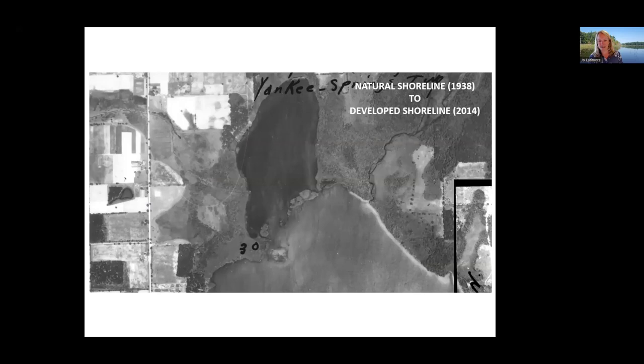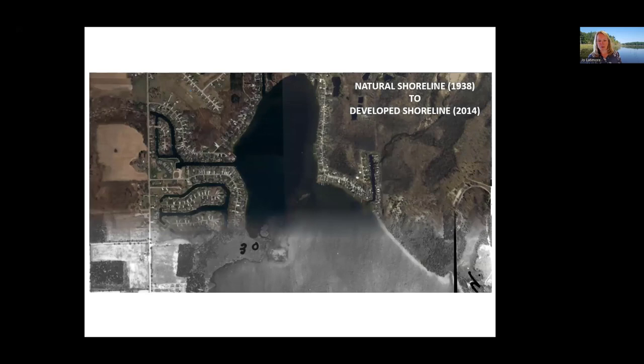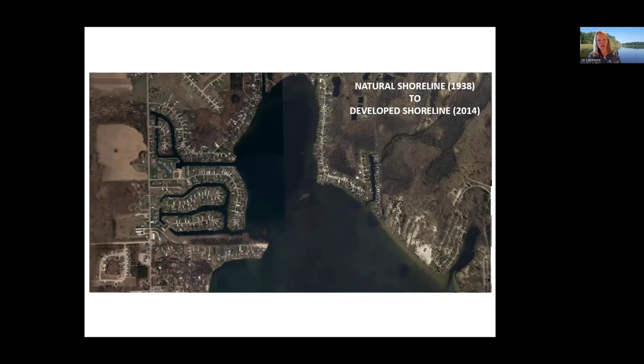Time-lapse aerial photos provided by the state of Michigan show the change from natural shoreline in the 1930s to developed shoreline today, from the Yankee Springs area in southern Michigan. You can see the shoreline going from all natural and undeveloped in the early photos, to 2014 showing development all along the shoreline — houses, roads, lots of docks, and a whole system of canals that didn't exist before, adding potential erosion, soil pollutants, and runoff into the water.